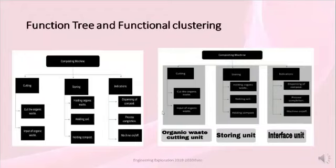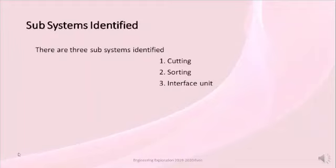In functional clustering, we have named cutting, sorting, and indications as the organic waste cutting unit, sorting unit, and interface unit respectively. In our project, we have three subsystems identified: cutting, sorting, and interface unit.